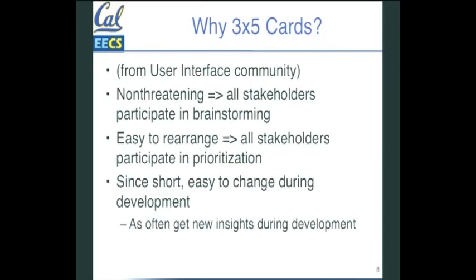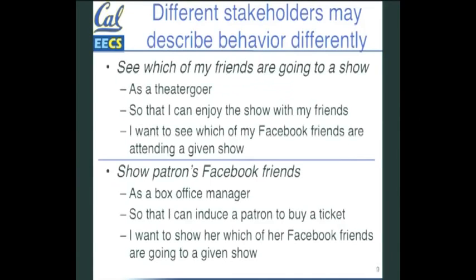Since these things are short, it's pretty easy to change them during the development process. It's important that user stories say 'as a stakeholder,' because different stakeholders will have different perspectives about what they want from a particular feature. For example, as a theater-goer, I want to see which of my Facebook friends are going to the show so I can have more fun. From the box office manager's perspective, the feature is great because it gets patrons to bring more friends. Different perspectives give different priorities, and there need to be people advocating for each stakeholder in these user stories.